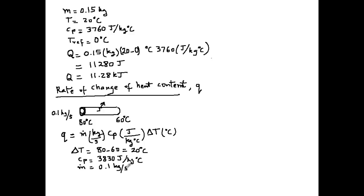So, we can go ahead and enter all the values in the equation. So, we have lowercase q equals 0.1 kilograms per second times 3830 joules per kilogram degree C times 80 minus 60 degrees C. This gives us the value for q as 7660 joules per second.